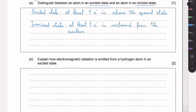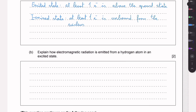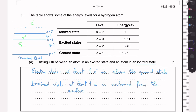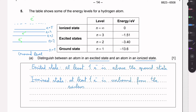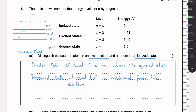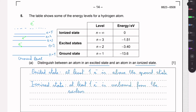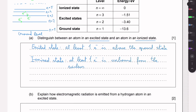Part B: explain how electromagnetic radiation is emitted from a hydrogen atom in an excited state. An electron can be at some excited state, and if it drops some levels, it must emit energy. So if it's at a higher energy level, for example at n=4, and then it drops to n=3, it has lost some energy, and this loss in energy is simply carried away by a photon.